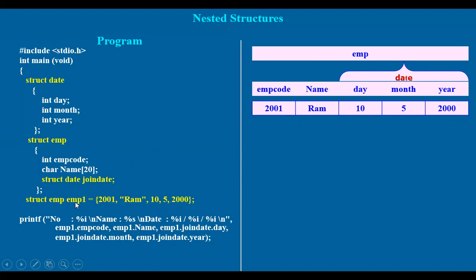Suppose we display this. EMP1 is the variable name, dot EMP code is the field name. Then EMP1 dot name for the name field. EMP1 dot join date for the date. This is the join date with three fields inside: day, month, year. So this is the complete program.